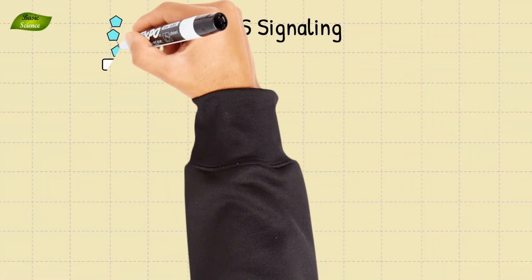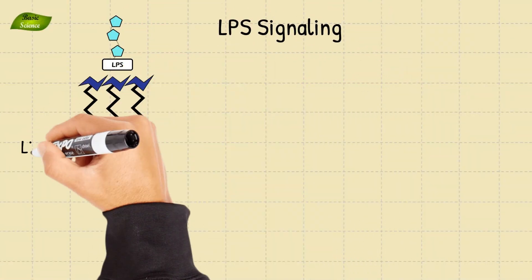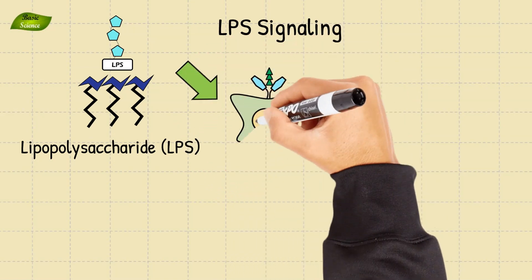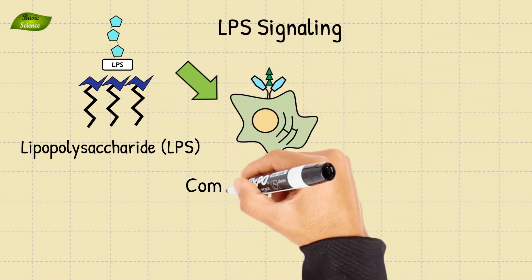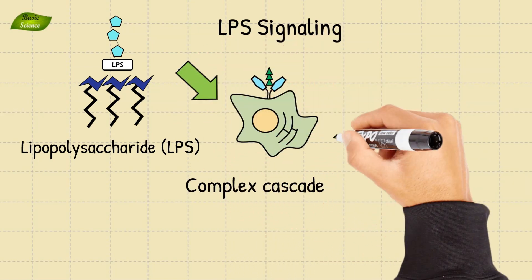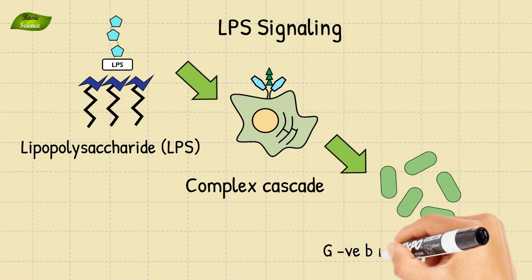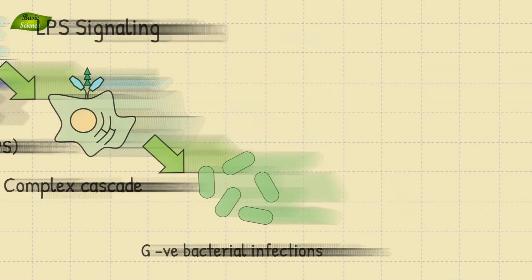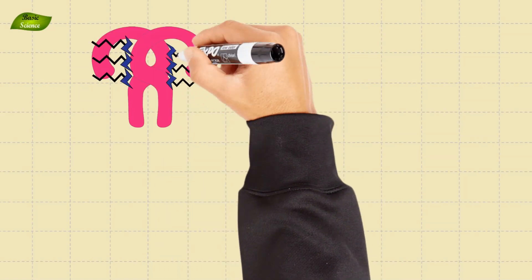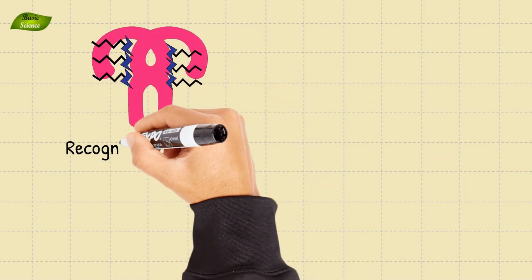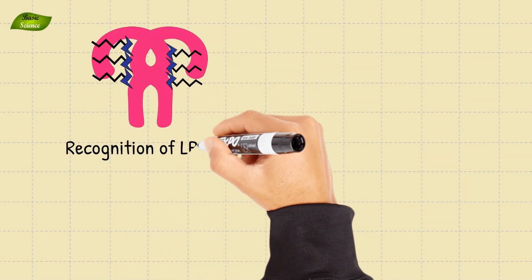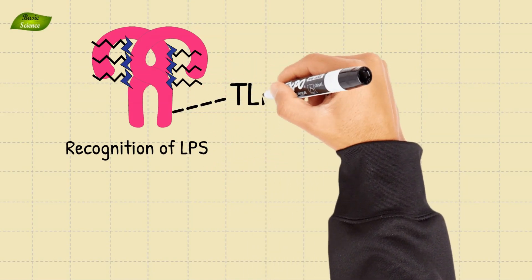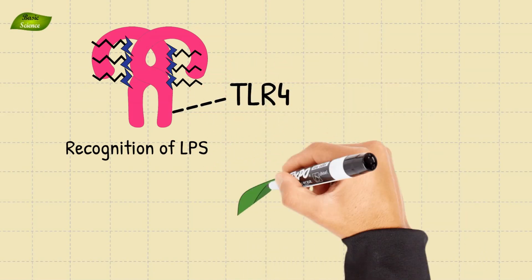Lipopolysaccharide, or LPS-mediated inflammation signaling, is a complex cascade that plays a crucial role in the immune response against gram-negative bacterial infections. The process begins with the recognition of LPS, a component of bacterial outer membranes, by Toll-like receptor 4, in short TLR4.